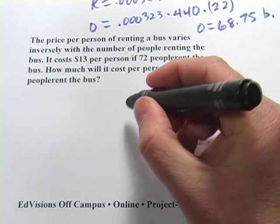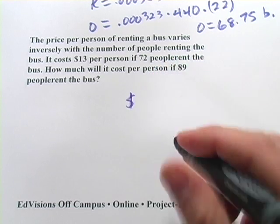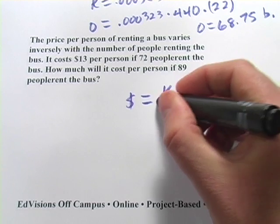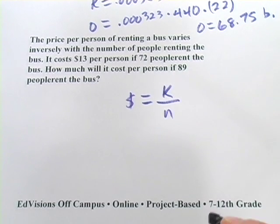So let's call the price of the bus, well, let's just put in a dollar sign for that. And it varies inversely. There's our constant, and then the number of people down here, we'll call that N.